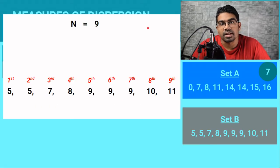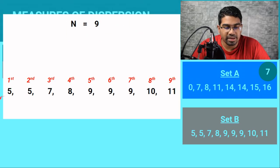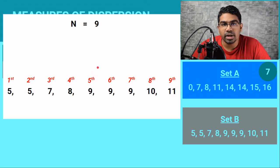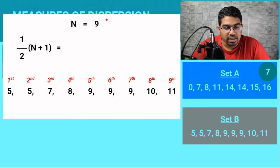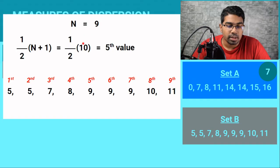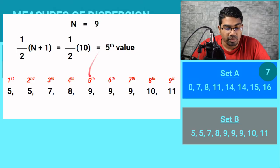What about when the number of data is an odd number? Let's look at set B. Set B has a total of 9 data. When we examine the set of data visually, we can see that the fifth value is actually the middle value. So when it comes to an odd number of data, the way to find the median is to add the total number of data by 1 and then divide by 2 — that is 1 over 2 times (n + 1). In this case n is 9, so it will be (9 + 1) divided by 2, which gives us the fifth value. The fifth value is 9, and this is our median.